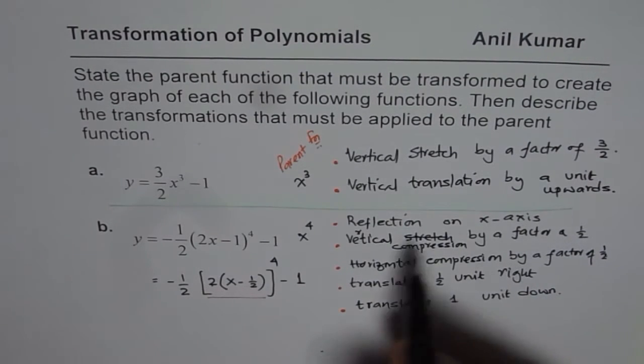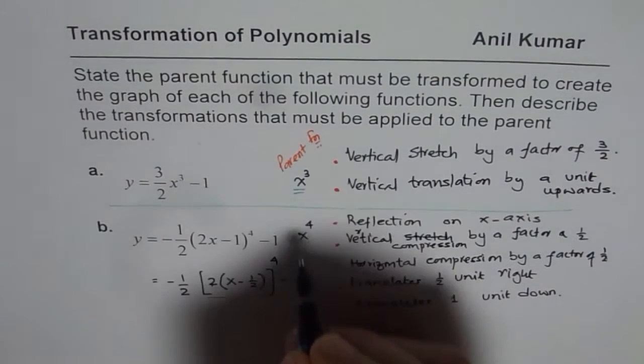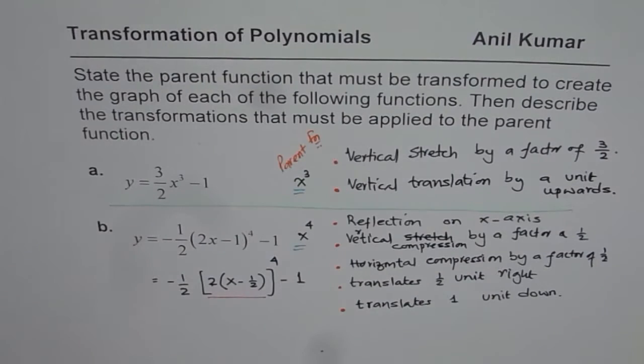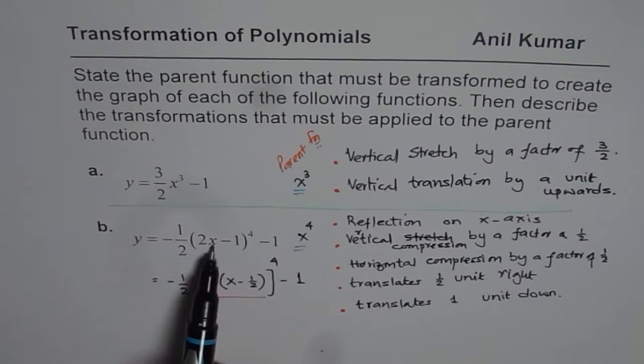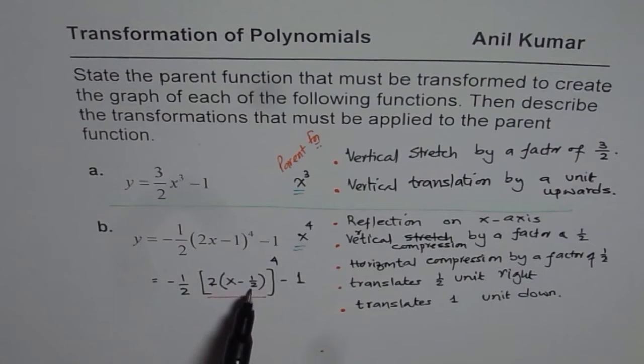So this all happens to the parent function x to the power of 4. So the parent function in part B is x to the power of 4. So these are the transformations which take place. It is important to note that the term inside should be factored to exactly get horizontal translation, otherwise you could make this mistake.